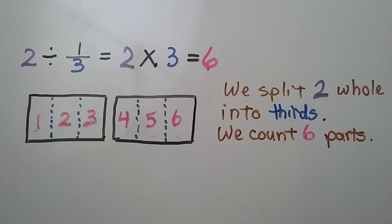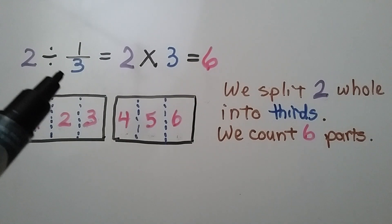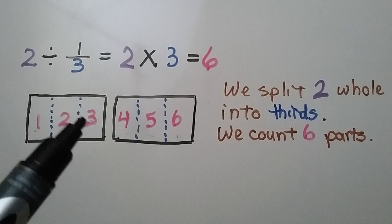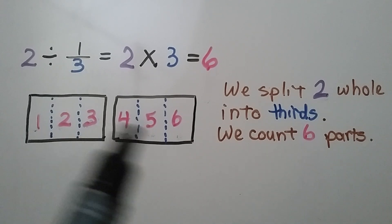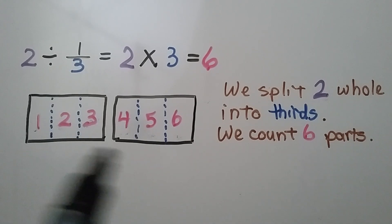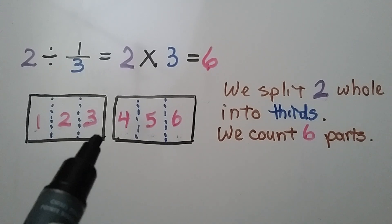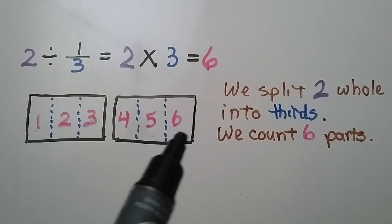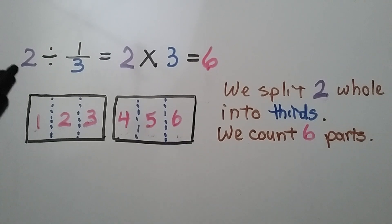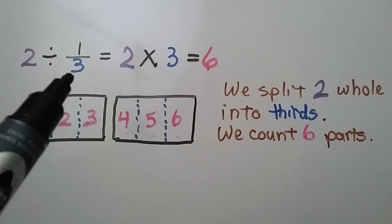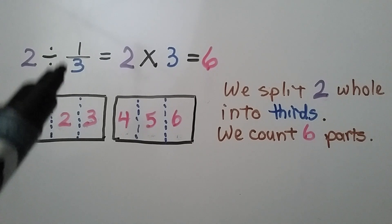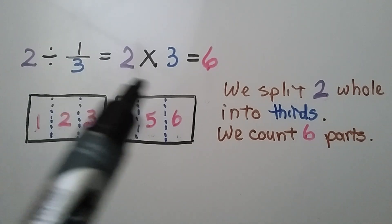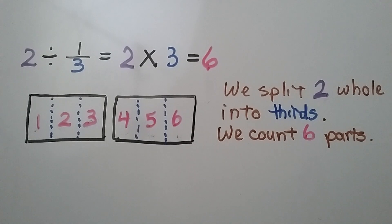Here's another example. We have 2 whole divided into thirds — 2 divided by 1 third. We have 2 whole rectangles, each divided into thirds. We count 6 parts. We just multiply the 2 whole by the denominator of this unit fraction: 2 times 3 is 6.